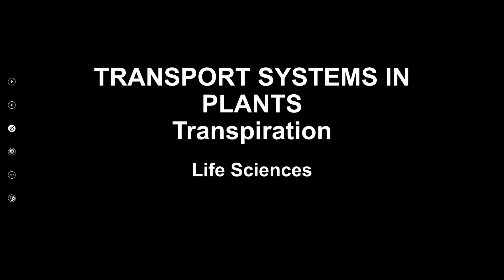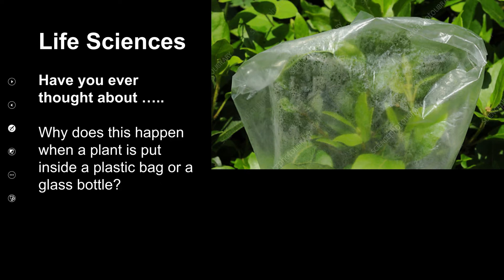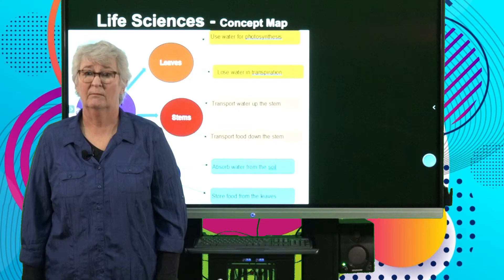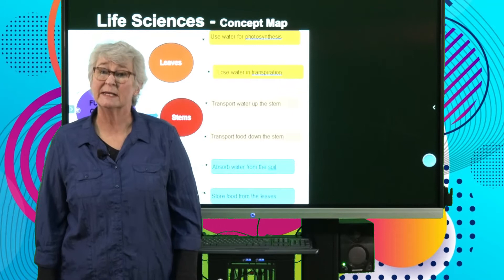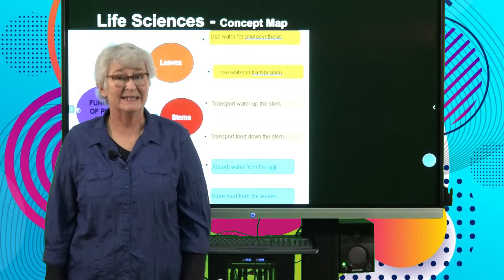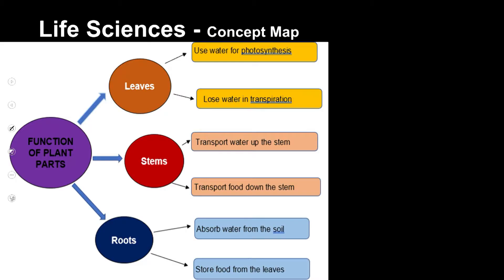Welcome to our next lesson in the series on plants — what they look like and how they work. The topic of today's lesson is transpiration in plants. Have you ever thought about why this happens when you put a plant in a plastic bag or a glass bottle? Today we're going to find out. Now we're going to look at the concept map of the topics we will be covering in this lesson and the next lesson.